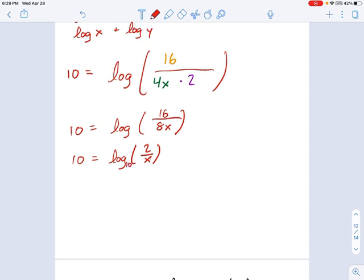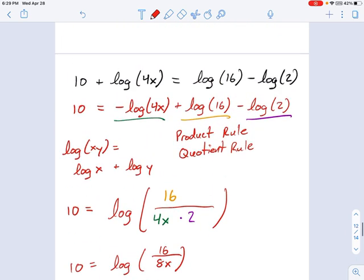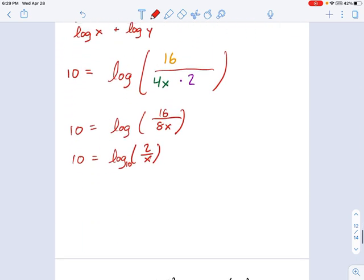Remember what log is. When there's no base, it means log 10. Did I start out with log 10 in this one? Yeah, I did. So this is log base 10 of 2 over x equals 10.